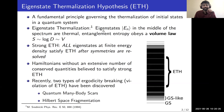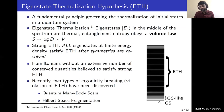The eigenstate thermalization hypothesis (ETH) is a fundamental principle which governs the thermalization of initial states. It loosely states that eigenstates in the middle of the spectrum of an isolated quantum Hamiltonian or circuit obey entanglement entropy that scales linearly with the volume of the system. If you diagonalize a quantum Hamiltonian, the spectrum has the ground state, low-lying excited states as quasi-particles, and highly excited states in the middle.